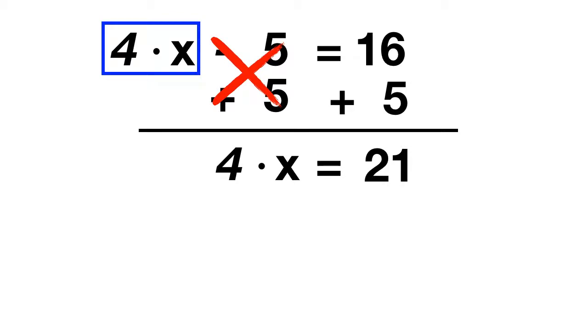Now we need to cancel out the 4 times. How do we cancel 4 times? We cancel multiplication by dividing, so we'll divide by 4. That'll cancel out, leaving us with just x. On the other side of the equation, we'll have 21 divided by 4.